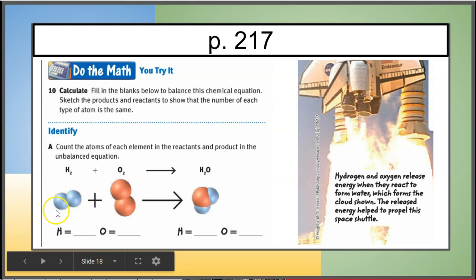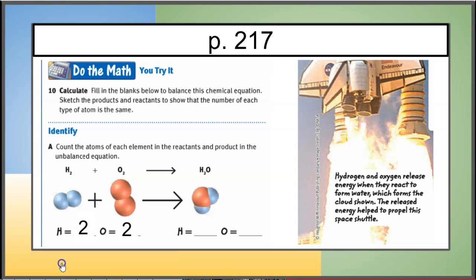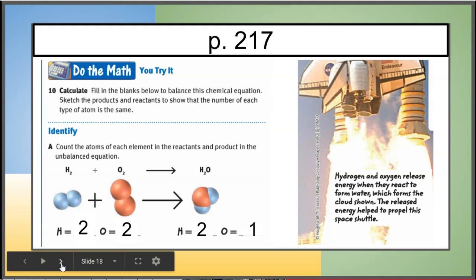We're starting with two atoms of hydrogen and one molecule of oxygen — one molecule of O2 has two oxygen atoms. One molecule of H2O would have two hydrogen atoms and one oxygen atom. So we'll put a two, two, two, two, and one to balance it.